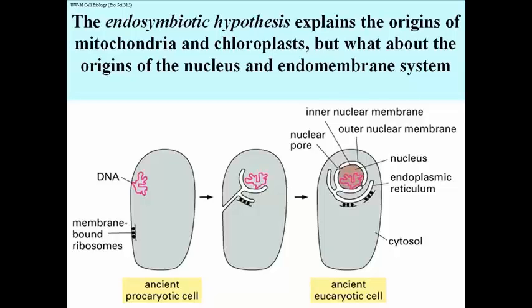Supporting the endosymbiotic hypothesis is the fact that both chloroplasts and mitochondria actually have their own DNA and they make some of their own proteins. However, most of the proteins in a mitochondrion or a chloroplast are not actually encoded on the DNA in those organelles, but are made from genes in the nucleus of the host cell. Therefore, these proteins have to move from the cytosol into those organelles.